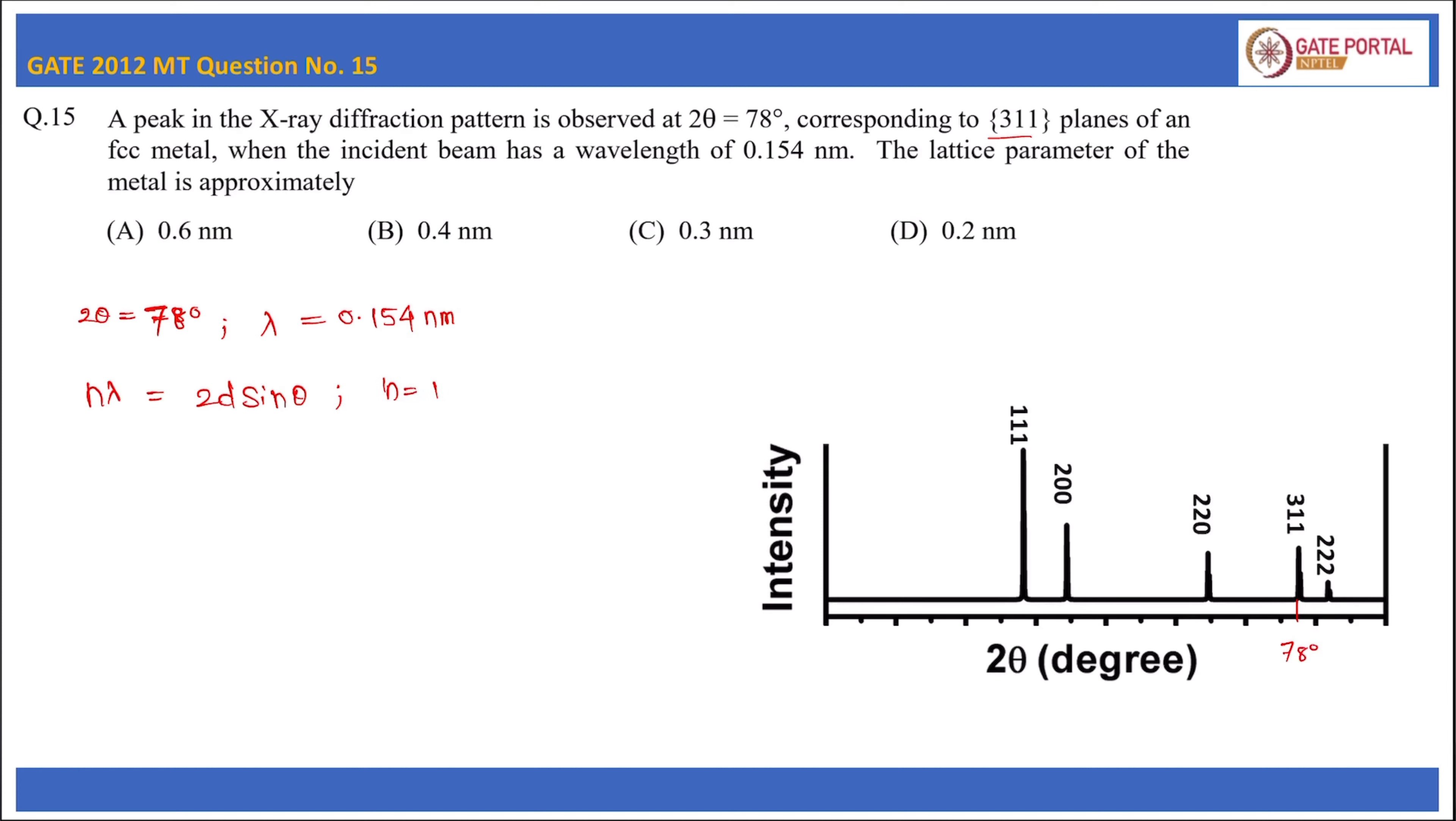Lambda is 0.154 nanometer, so let us keep the same unit. Now put the values in Bragg's law: 0.154 nanometer = 2 × d × sin(78/2), where θ is 78 by 2.